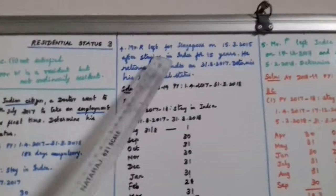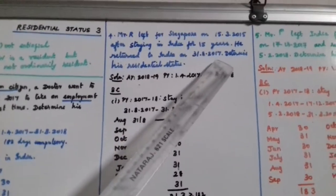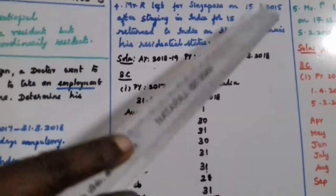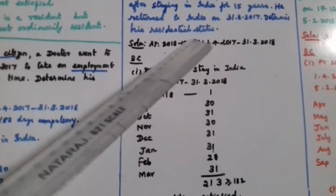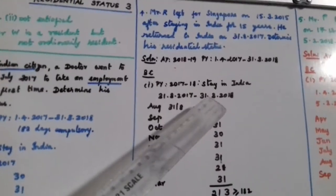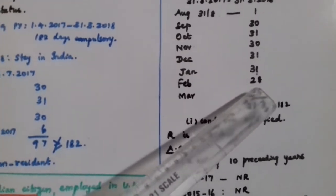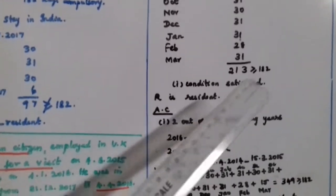Next problem: Mr. R left for Singapore on 15-3-2015 after staying in India for 15 years. He returned to India on 31-8-2017. Determine his residential status. In the previous year 2017-18, his stay in India from 31-8-2017 covers August, September, October, November, December, January, February, and March — totalling more than 182 days. The first basic condition is satisfied.